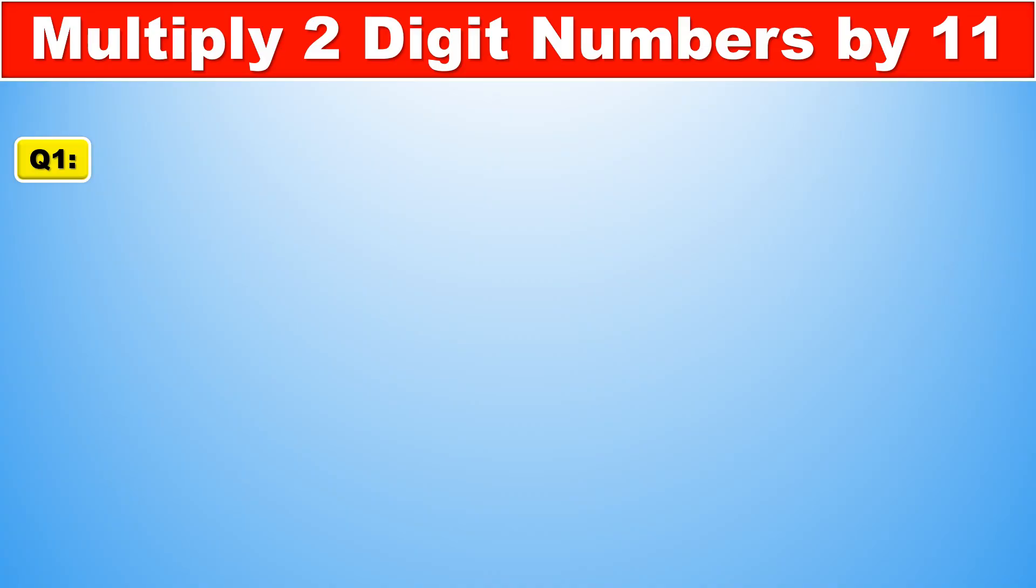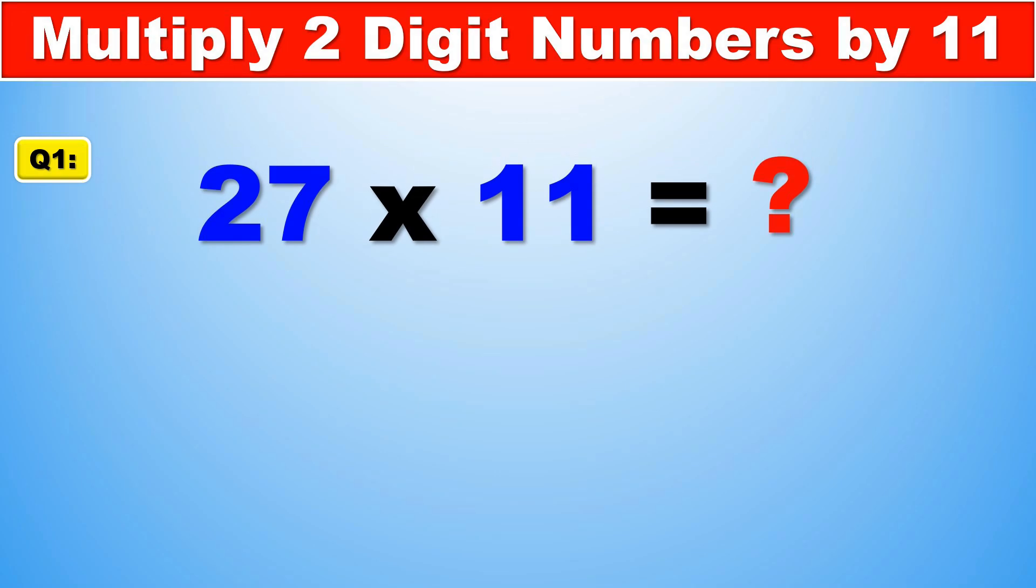We'll start with a simpler example. Say 27 times 11. How do you figure this out? Well it's actually rather simple. The first digit of 27, 2, goes in the left-hand side, so 2 is at the beginning. The right-hand part of 27 goes at the right-hand side of the answer, so 7 goes at the end. And the middle part is just those two numbers added together. 2 plus 7, which is 9. So the middle number is 9.